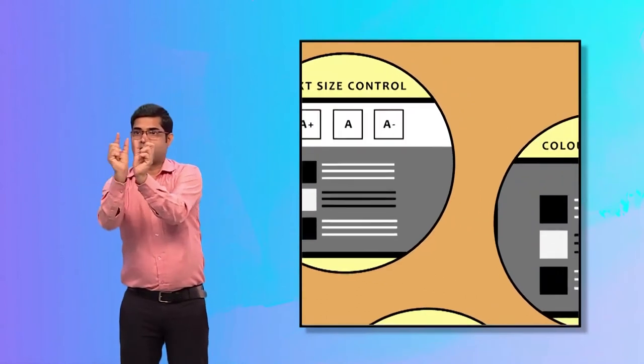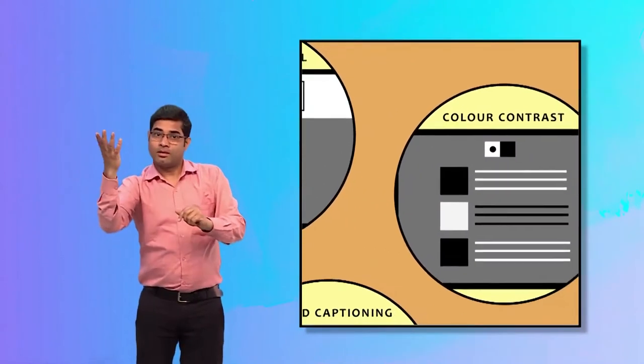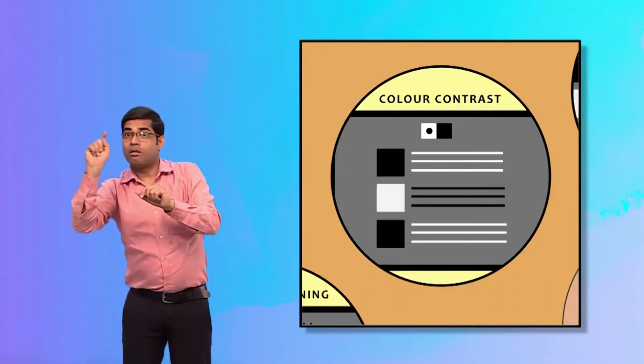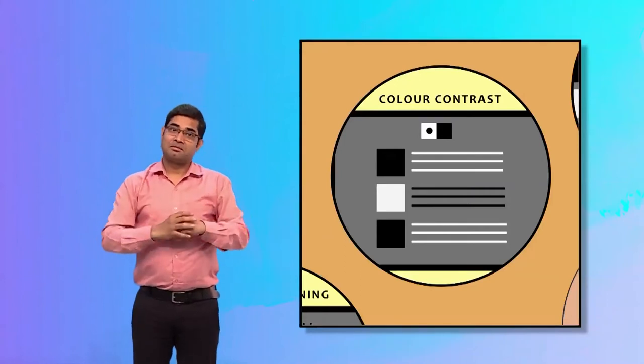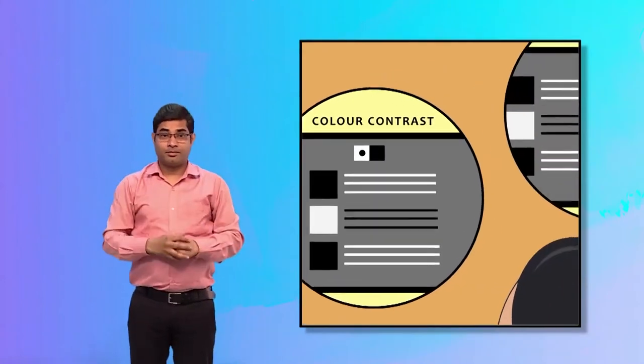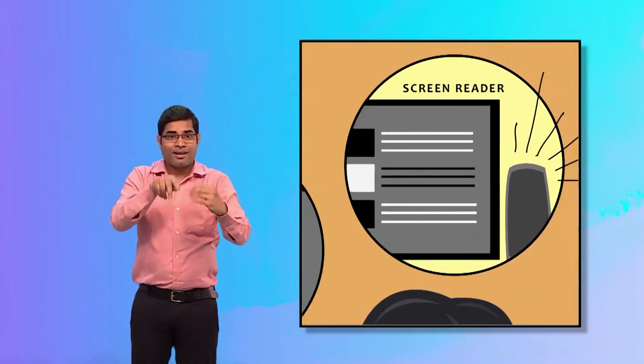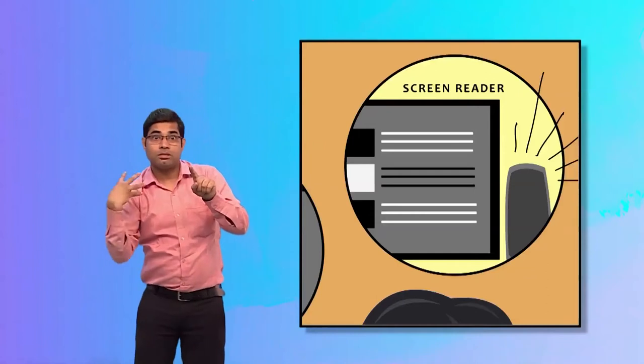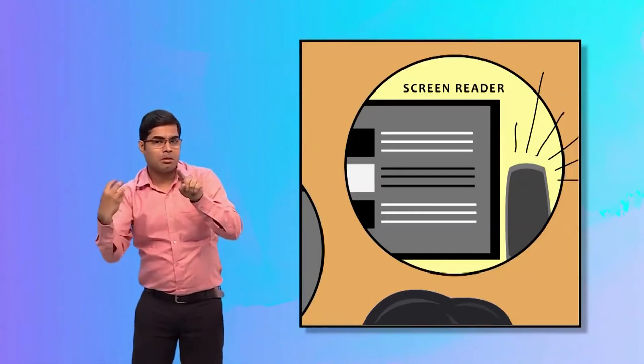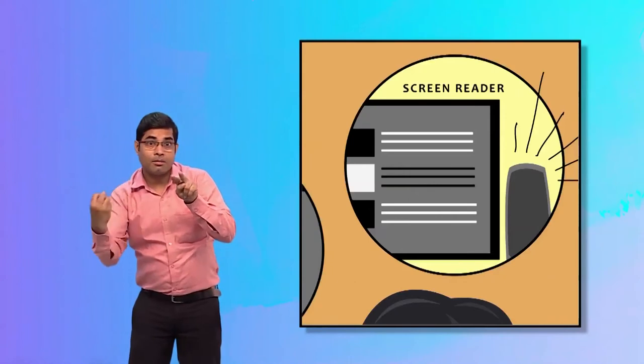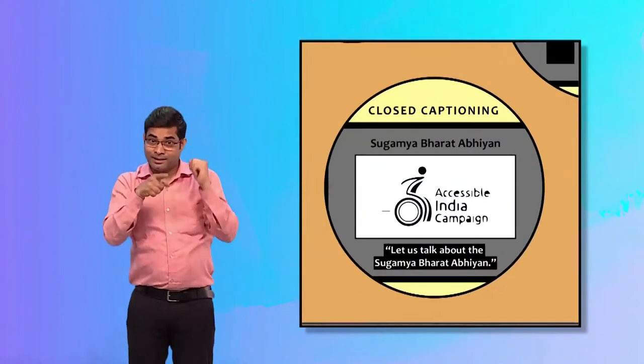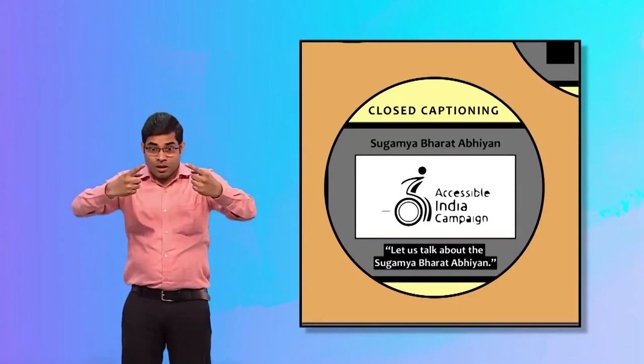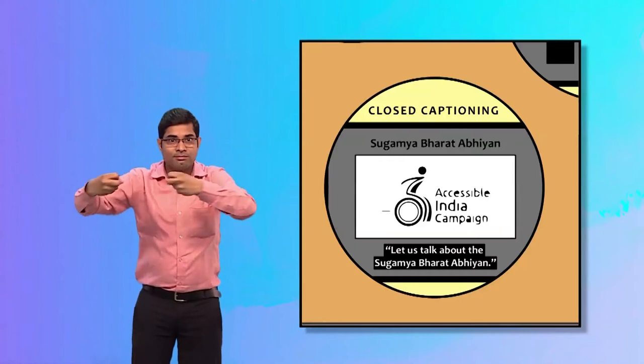Color contrast is shown by boxes with the letter A in different color combinations. Screen reader is denoted by the text on the screen being read with voice coming out of the speakers. And lastly, closed captioning, which is shown as a box of words appearing at the bottom of a video screen.